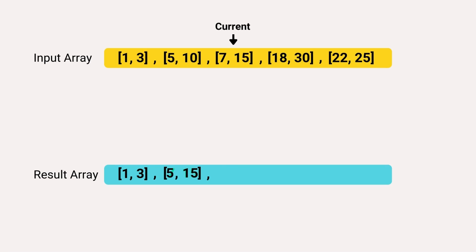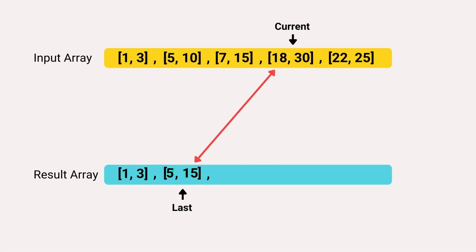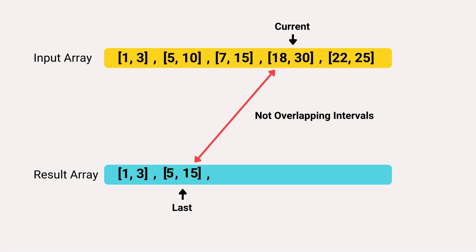Moving on to the next iteration, the current interval has a start time of 18 and an end time of 30, while the last interval has a start of 5 and an end of 15. The start time of the current interval is greater than the last interval's end time, indicating they are not overlapping and should not be merged. So we append the current interval to the result array.